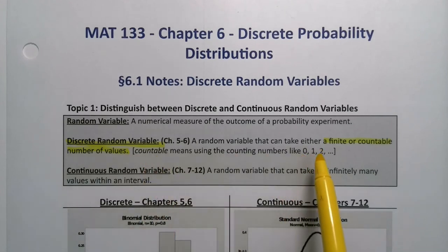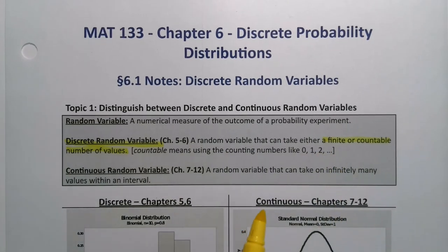So the counting numbers 0, 1, 2, going on to forever, is technically countable. The integers are countable. The whole numbers are countable. The natural numbers are countable. All of those numbers are countable. So it can be infinite. Or it could be finite, meaning there's only 20 options or 50 options and that's it. So, for example, shoe size is finite.